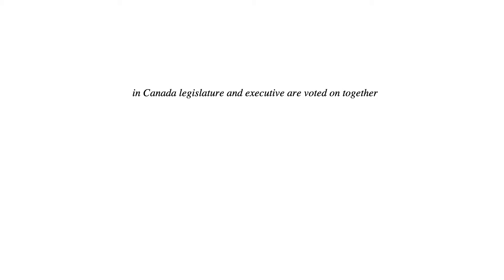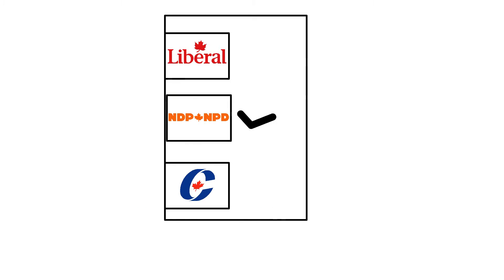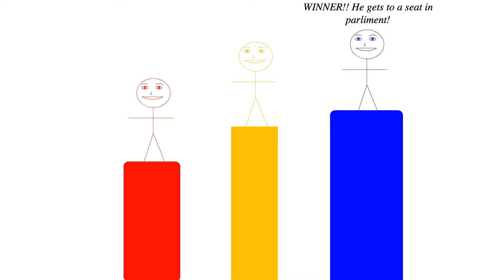Instead of the American election where the legislature and the executive are voted on separately, in Canada we vote on them together. What you do is you vote for individual members of Parliament, which is our legislature. The country divides up into ridings and you vote for the MP representing your party in that riding. The person with the most votes gets a seat in Parliament, and the party with the most seats becomes the government and the head of the party becomes the Prime Minister.